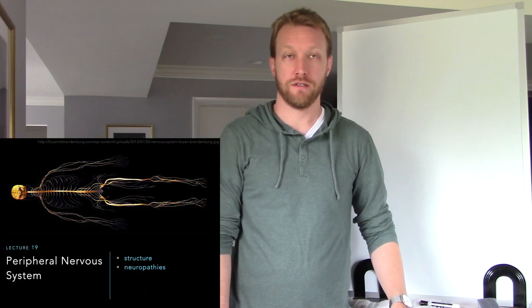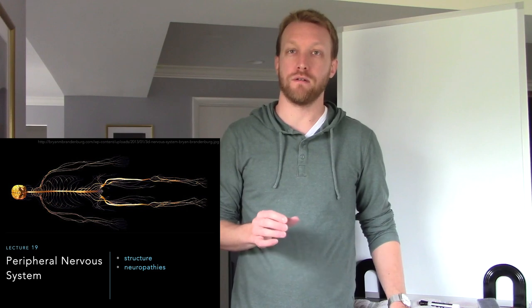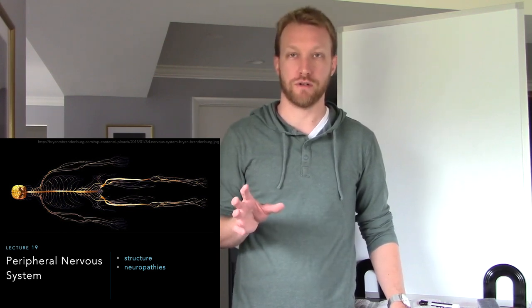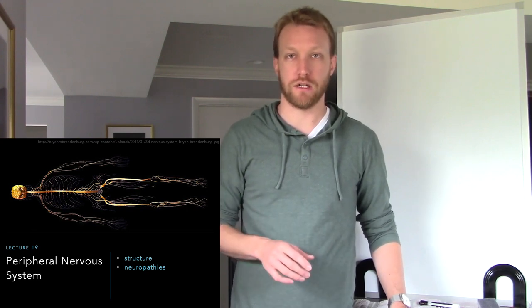Hello everyone. This lecture is on the peripheral nervous system and will provide an overview of its structure and the damage that can occur. We'll go over the three different types of damage: whether you're damaging the myelin sheath, the axons within nerves, or the nerve itself. I'll highlight just a couple of different neuropathies.